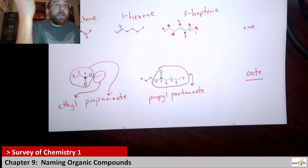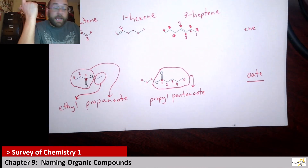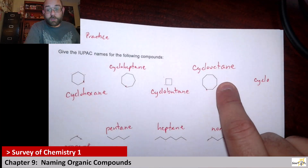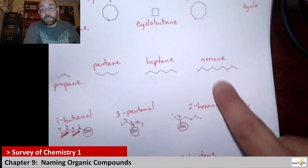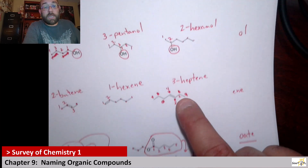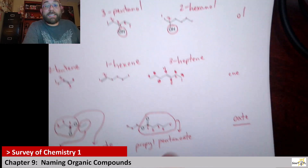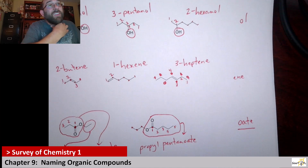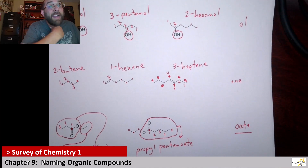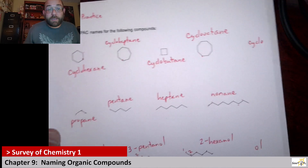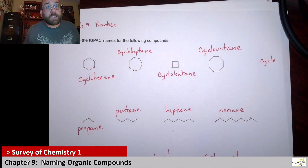Hopefully this video kind of helps. We looked at cyclic structures, cyclic alkanes, regular chain alkanes, alcohols, alkenes, and esters. These are going to be the dominant naming categories we're looking at here. As always, stay weird. Until next time, adios.